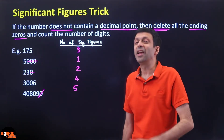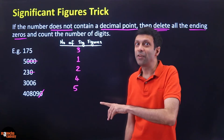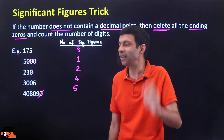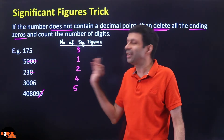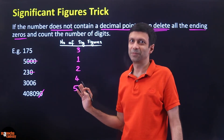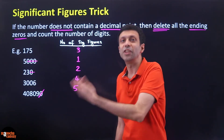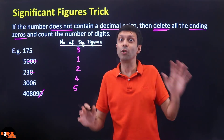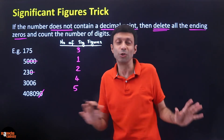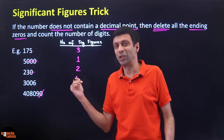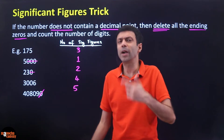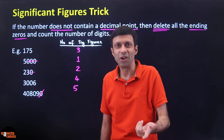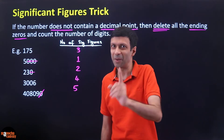In summary, if you have a number which does not have any decimal point, just delete the ending zeros. The number of digits that are left will give you the number of significant figures. You don't have to remember all those complicated rules — just use this simple trick. But what about numbers which have a decimal point? Don't worry, I'm coming to that next.